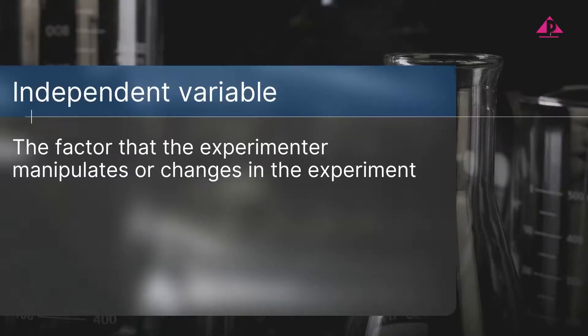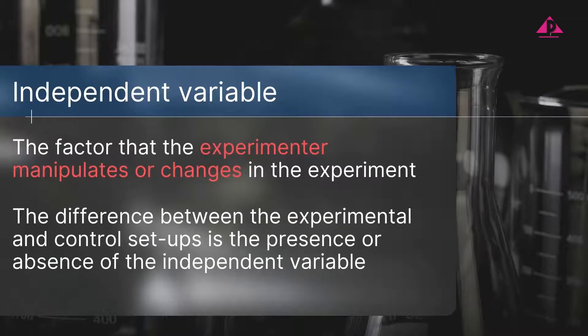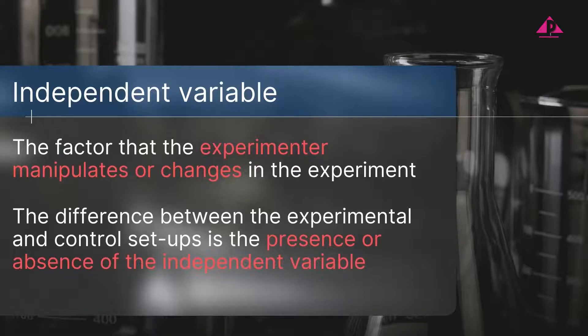The factor that we are going to study in the experiment is the independent variable. It is the variable that the experimenter manipulates or changes in the experiment. A control experiment usually involves two setups, an experimental setup and a control setup. The difference between the two setups is the presence or absence of the independent variable, which is usually absent in the control setup.